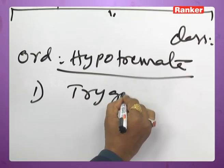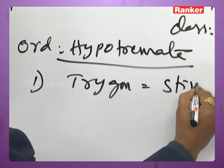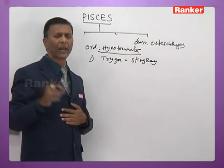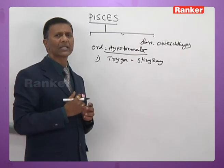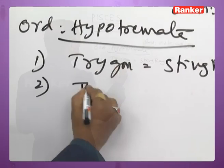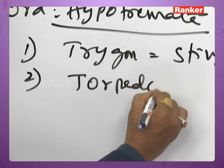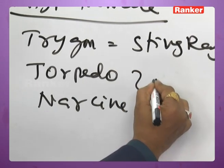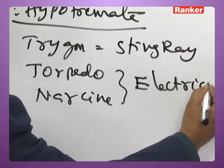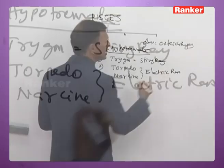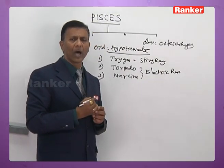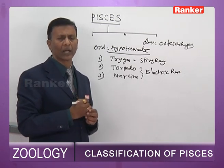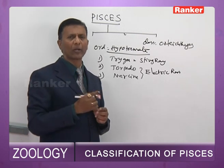Examples for Hypotremata: Trigon, commonly called stingray, where the caudal fin is modified into a long whip-like tapered structure with a poisonous sting. Torpedo and Narcine are commonly called electric rays, in which the pectoral or dorsal muscles are modified into electric organs.